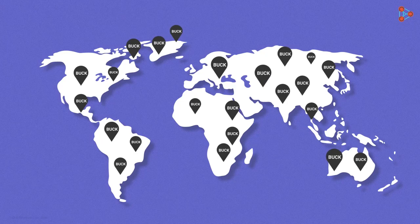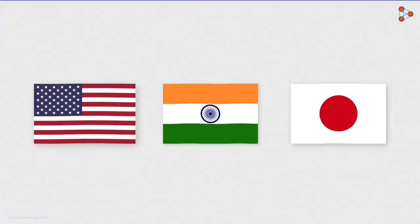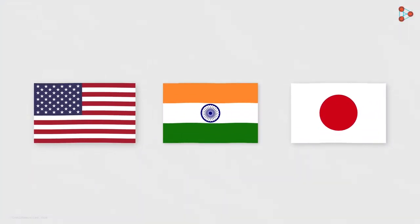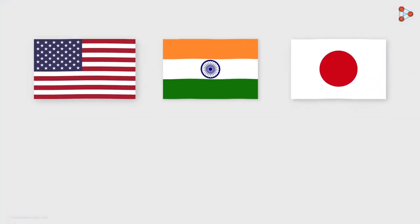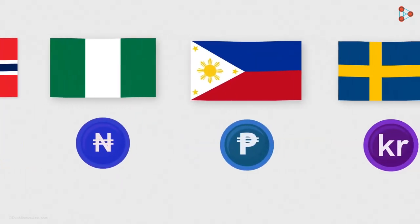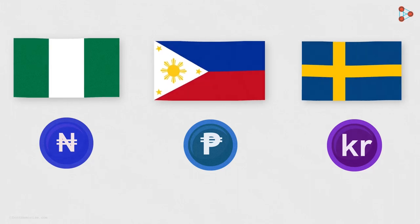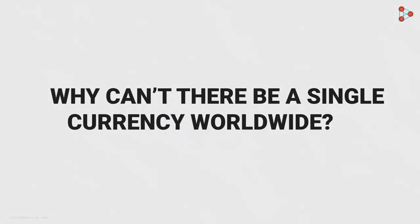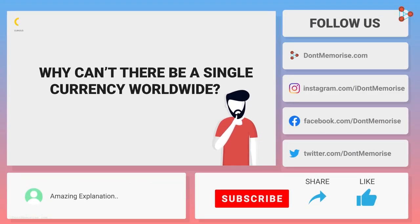The word buck is just a slang, but every nation has its own currency. For example, the US has dollars, Japan has yen, India has rupee, and so on. Have you ever wondered why different nations have different currencies? Why can't there be a single currency worldwide? Are there plans to build a single currency globally? This is your cue to explore — let us know your findings in the comment section.